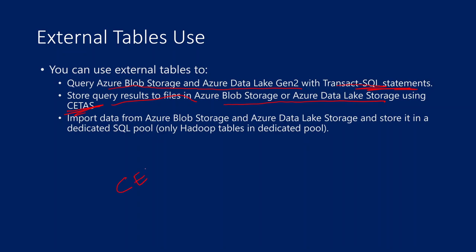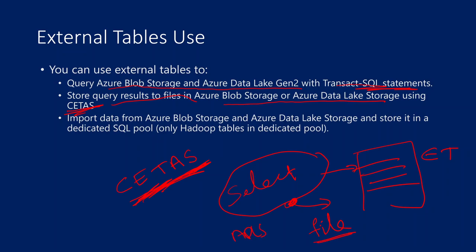If you have seen my past videos, we discussed about CETS — create external table as select. This will also create one external table, but here whatever select query you execute, that select query output will be created as an external table. In the CETS case, whatever output you generate from the select query will be saved as a file inside your storages — for example inside your ADLS Gen2. And on top of that file, the external table will get created. So indirectly, you are able to store the query results into your blob or ADLS Gen2 accounts.